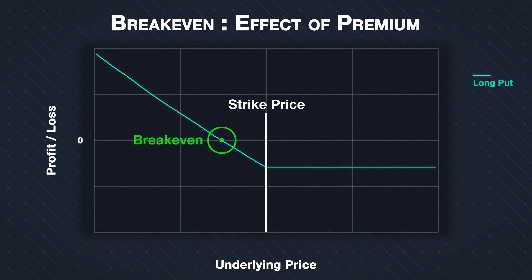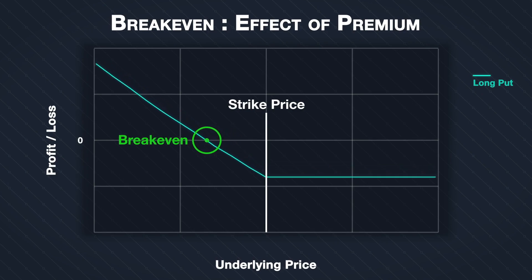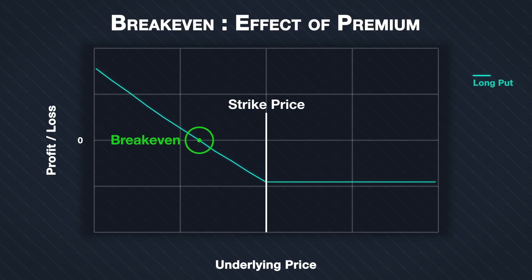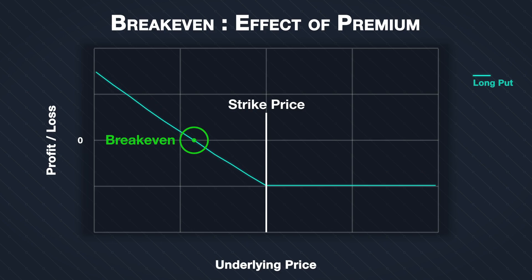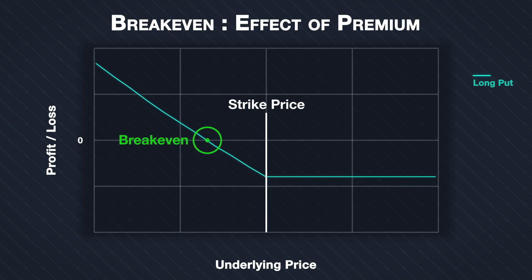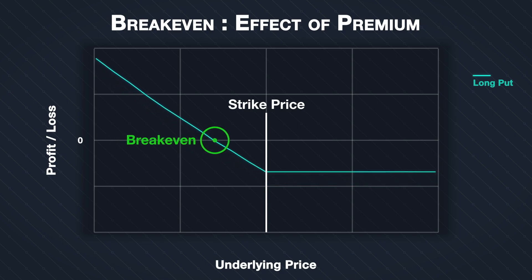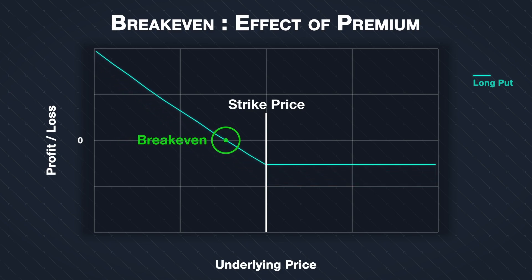The higher the option premium, the further away from the strike price the break-even price will be. High option premiums favour the option seller, as the price needs to move further before the seller will start making a loss. The option buyer on the other hand will benefit from lower option premiums, because the price will then need to move a smaller distance before they will start to make a profit.